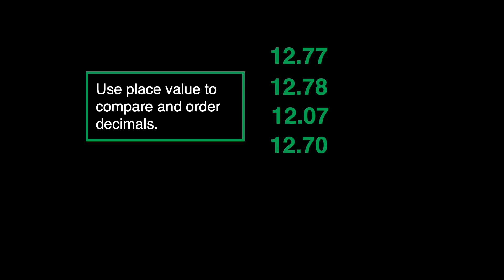Next is to use place value to compare and order decimals. We can observe that in the whole number part, all of these decimals have 12. Now let's observe the tenths place. We can see that the first, second, and fourth decimals have 7 in their tenths place. For the third decimal, it has 0 in the tenths place. We can say that the third decimal is the least among the four.